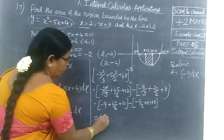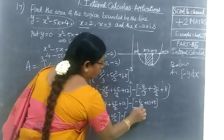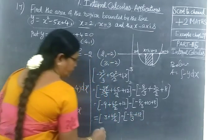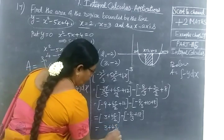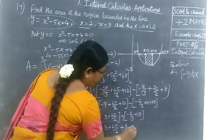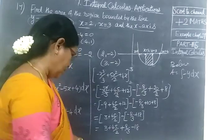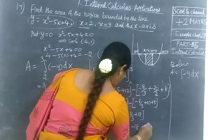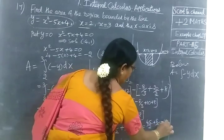Equal to: minus 9 plus 45 by 2 minus 12, then minus of minus 8 by 3 plus 10 minus 8. Simplifying: minus 21 plus 45 by 2 plus 8 by 3 minus 2. That line gives minus 45 by 2 plus 8 by 3 minus 15.